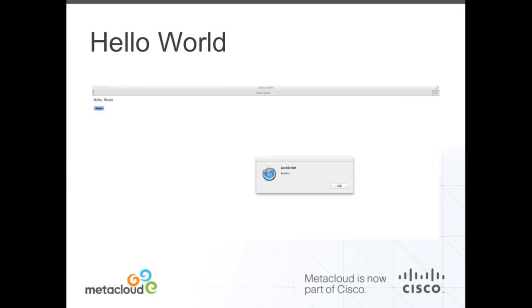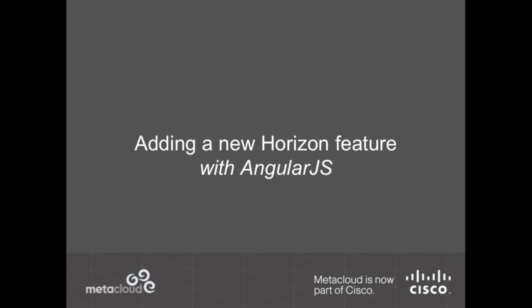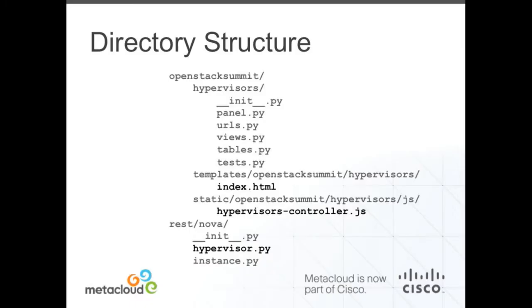This is the output of that hello world example — totally unimpressive from a visual perspective, but if you think about all the plumbing going on behind the scenes it's actually pretty neat. You have your hello world text, a button, and clicking the button pops up a JavaScript alert. I wanted to briefly go through how you would add a new feature to Horizon using AngularJS and client-side rendering.